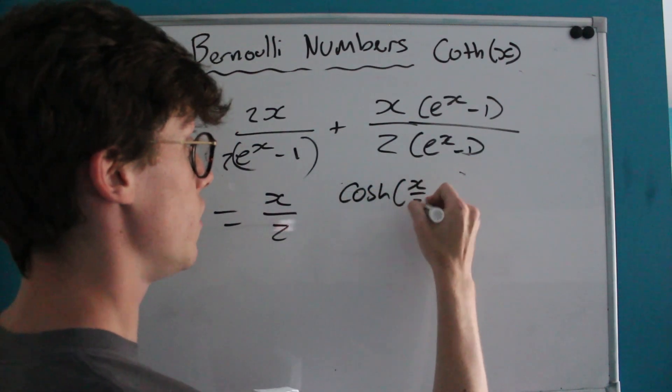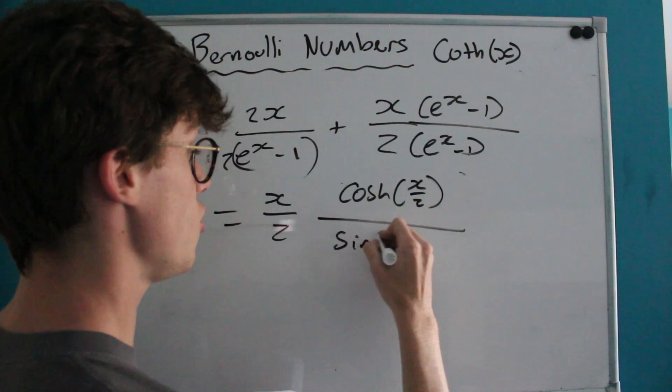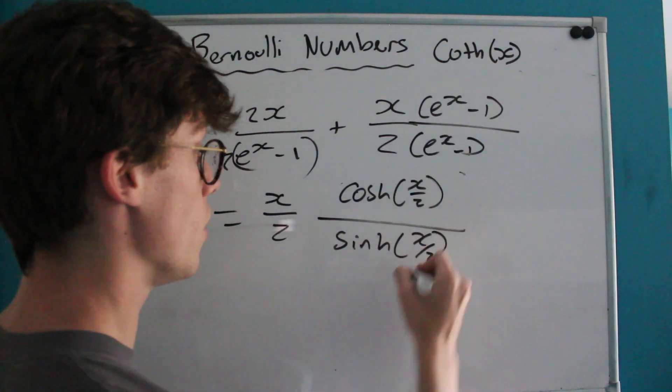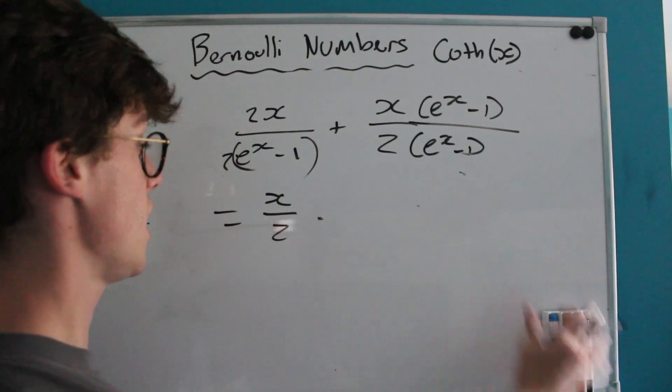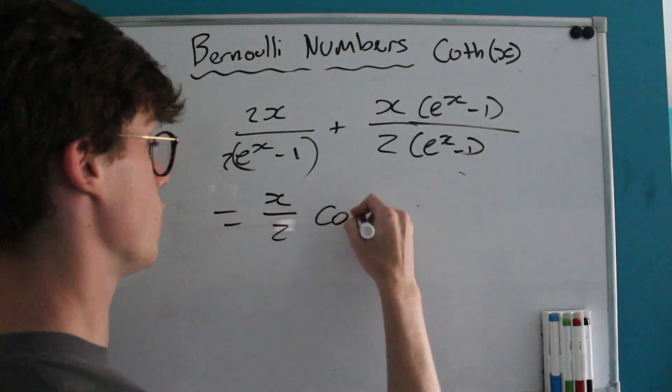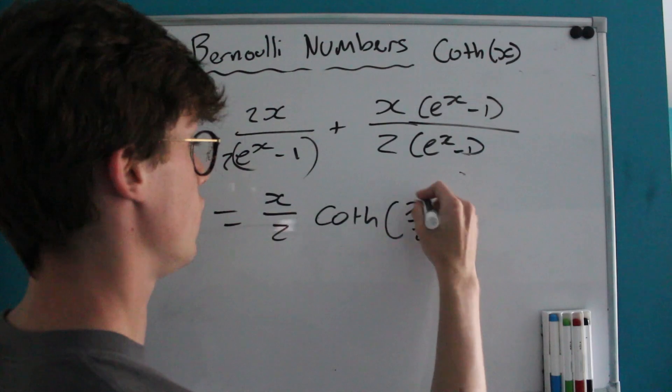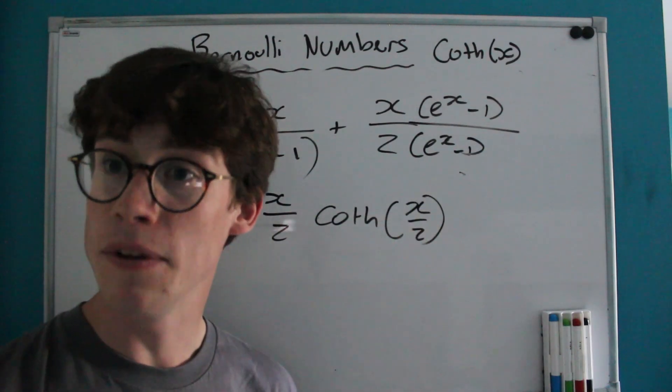cosh of X/2 divided by sinh of X/2. In other words, when we have cosine over sine, it's hyperbolic cotangent of X/2. This puts us in a great position.